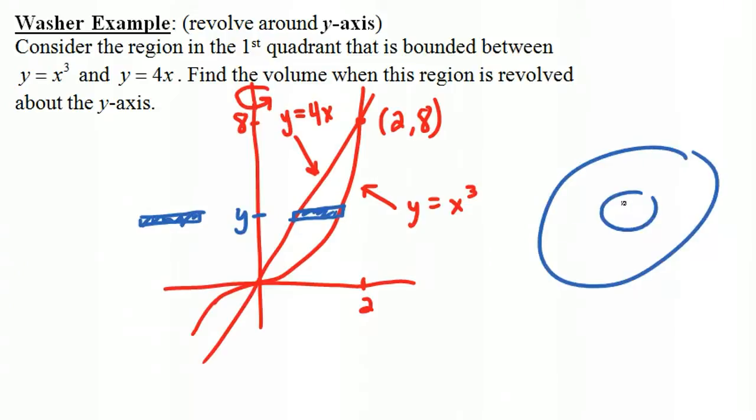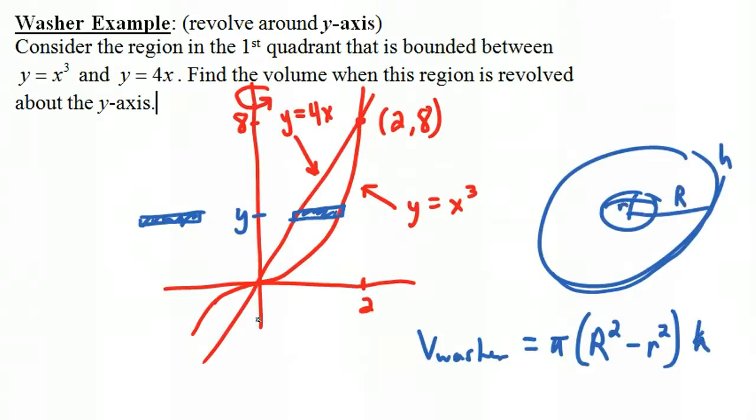You could draw the washer if you want to, and that washer will have a certain volume, and the volume of the washer, just like before, will be pi times big R squared minus little r squared times h. If the height of this is h, we call the big radius big R and the little radius little r.